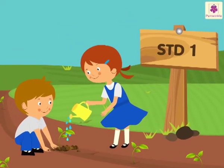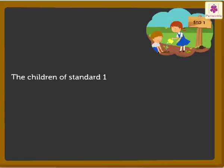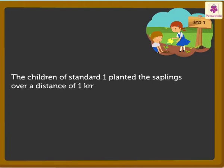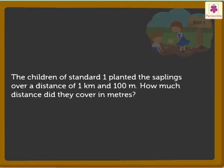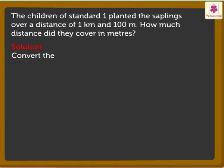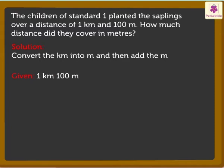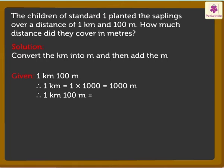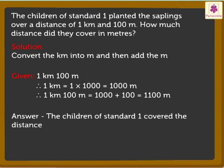Now, it's time to plant some trees. The children of Standard 1 planted the saplings over a distance of 1 kilometer and 100 meters. How much distance did they cover in meters? To find the answer, we need to first convert the kilometers into meters and then add the meters. Here, we have 1 kilometer and 100 meters. 1 kilometer is equal to 1 into 1,000, which is equal to 1,000 meters. Now, 1,000 plus 100 is equal to 1,100 meters. So, they covered the distance of 1,100 meters.